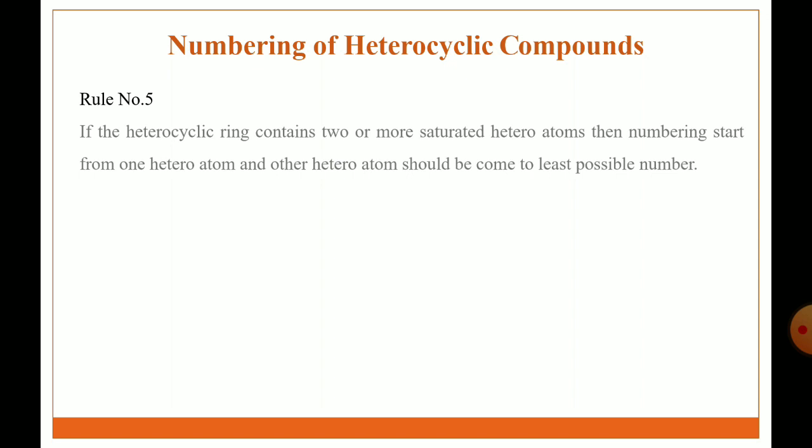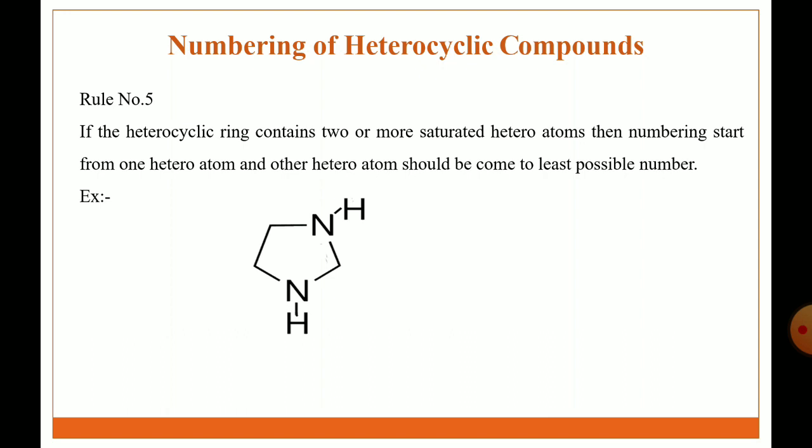Rule 5: if the heterocyclic ring contains two or more saturated heteroatoms, then numbering starts from one heteroatom and the other heteroatom should come at the least possible number. For example, this is a five-member heterocyclic ring containing two saturated nitrogen heteroatoms — name is imidazole. The first number is given to one saturated heteroatom and the next number should be the least possible number for the next heteroatom.